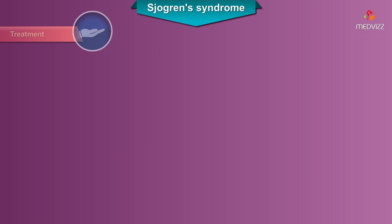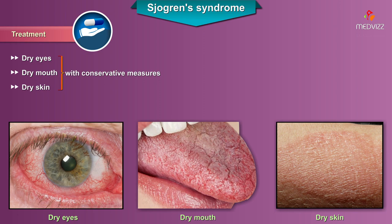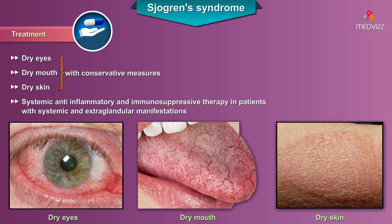Treatment involves managing dry eyes, dry mouth, and dry skin with conservative measures. However, systemic anti-inflammatory and immunosuppressive therapy is required in patients with systemic and extraglandular manifestations.